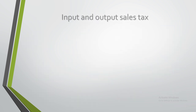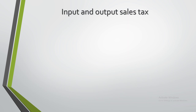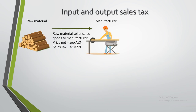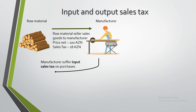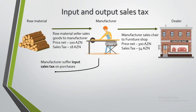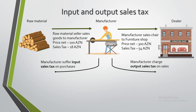Now let's take a look at what input and output sales tax are. Input sales tax is a tax that is added to the price when goods and services are purchased. In our example, you can see that the manufacturer suffers input sales tax on purchase. Output sales tax is a tax that is calculated and charged on the sale of goods and services from your business. You can charge output sales tax only if you are registered as a sales tax payer. In this case, the manufacturer charges output sales tax on the sale to the dealer.